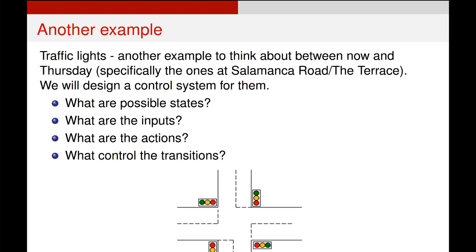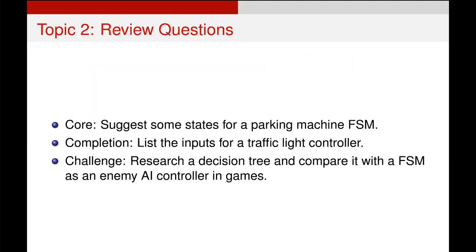The final example to think about before the next video is how you might make a finite state machine to control a four-way intersection. Think about the states, the inputs, the actions, and the transitions between them. The next video will go through assembling and then extending this particular example.